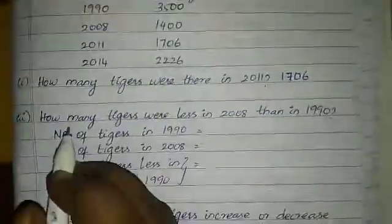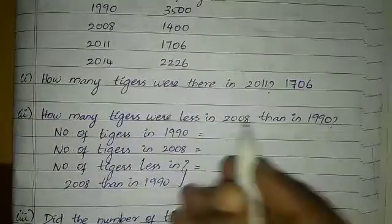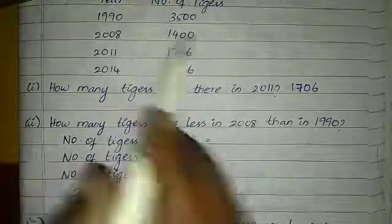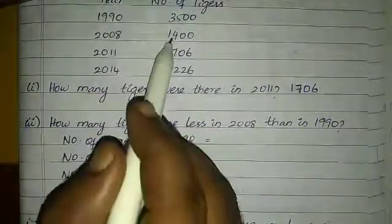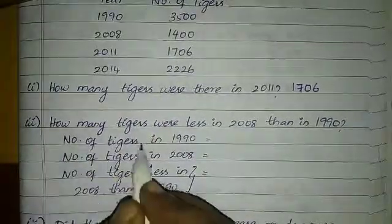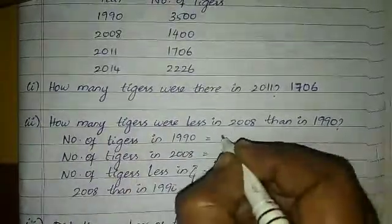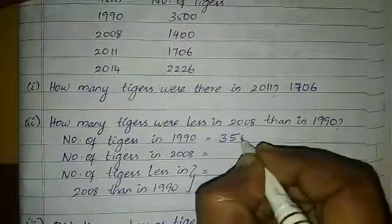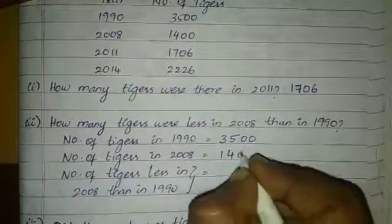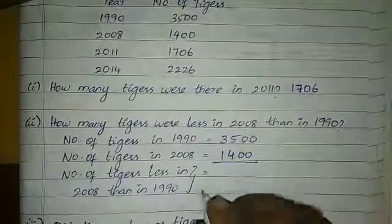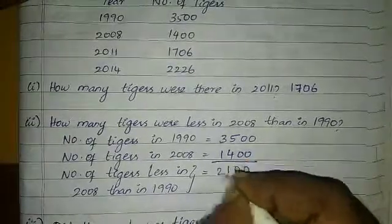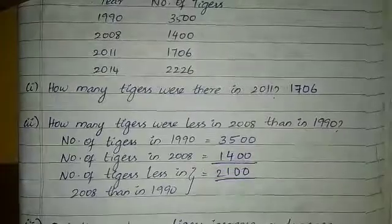How many tigers were less in 2008 than in 1990? In 1990, the number of tigers is 3,500. In 2008, if you subtract the two, we get 2,100 tigers less.